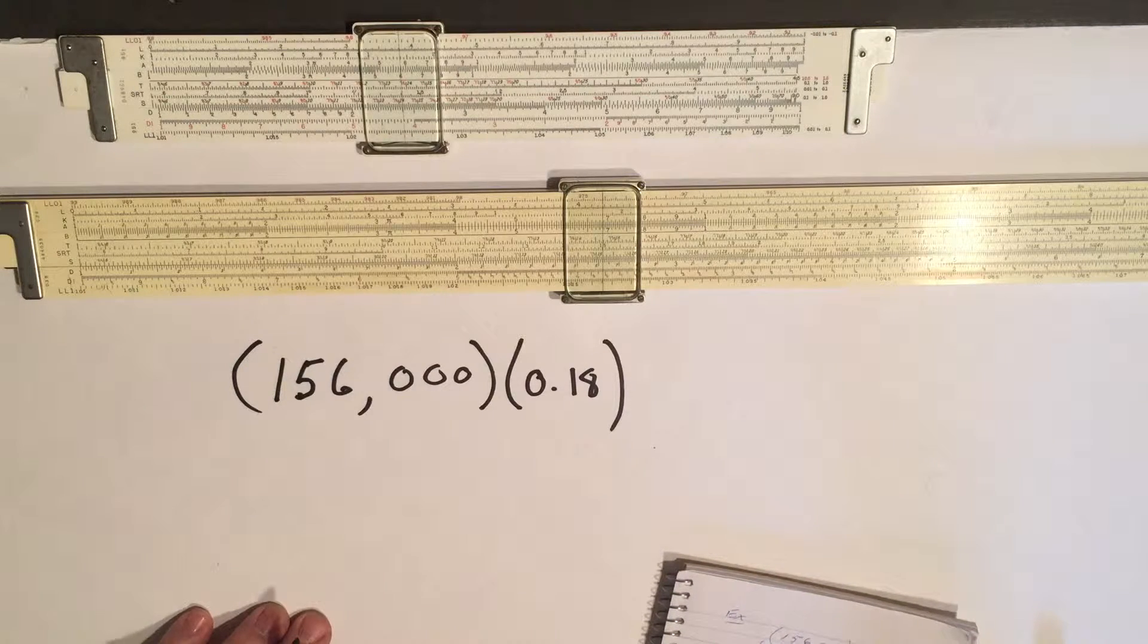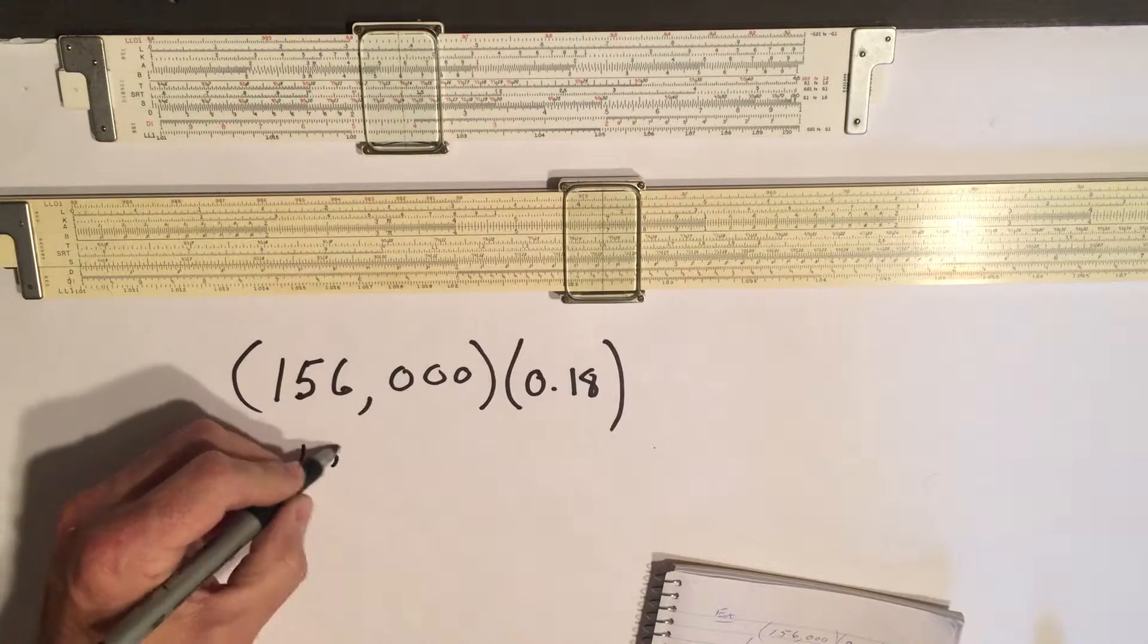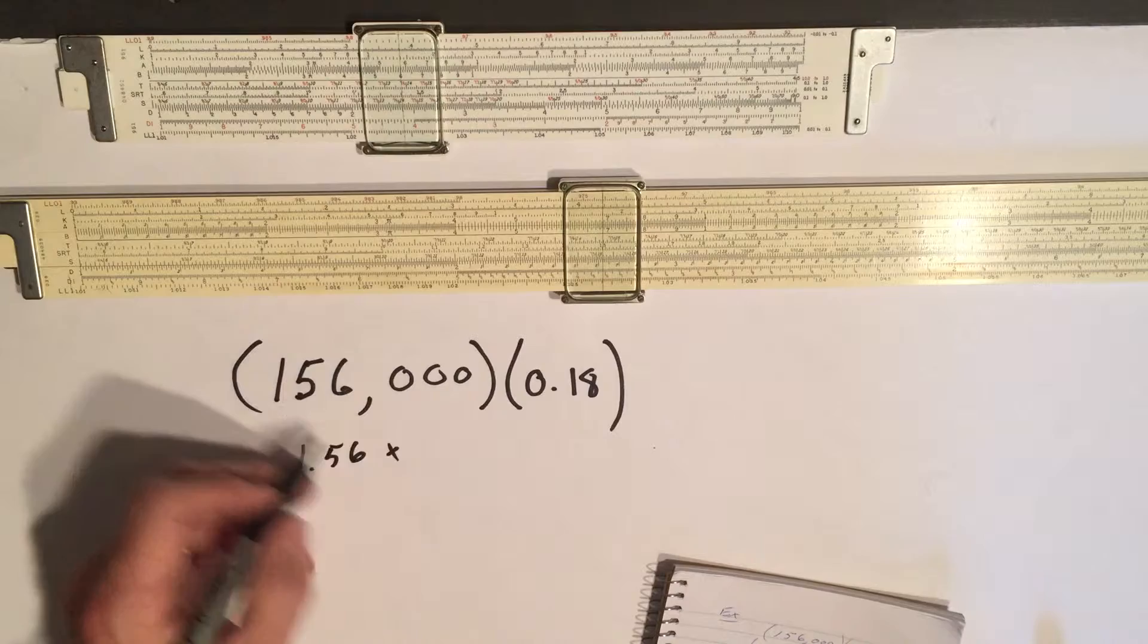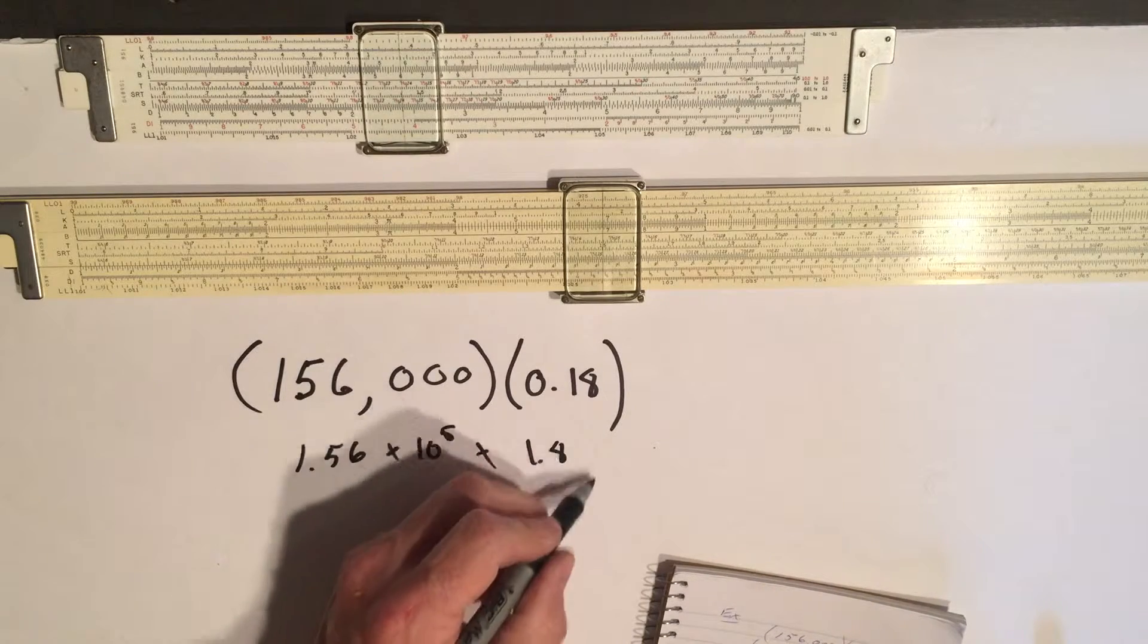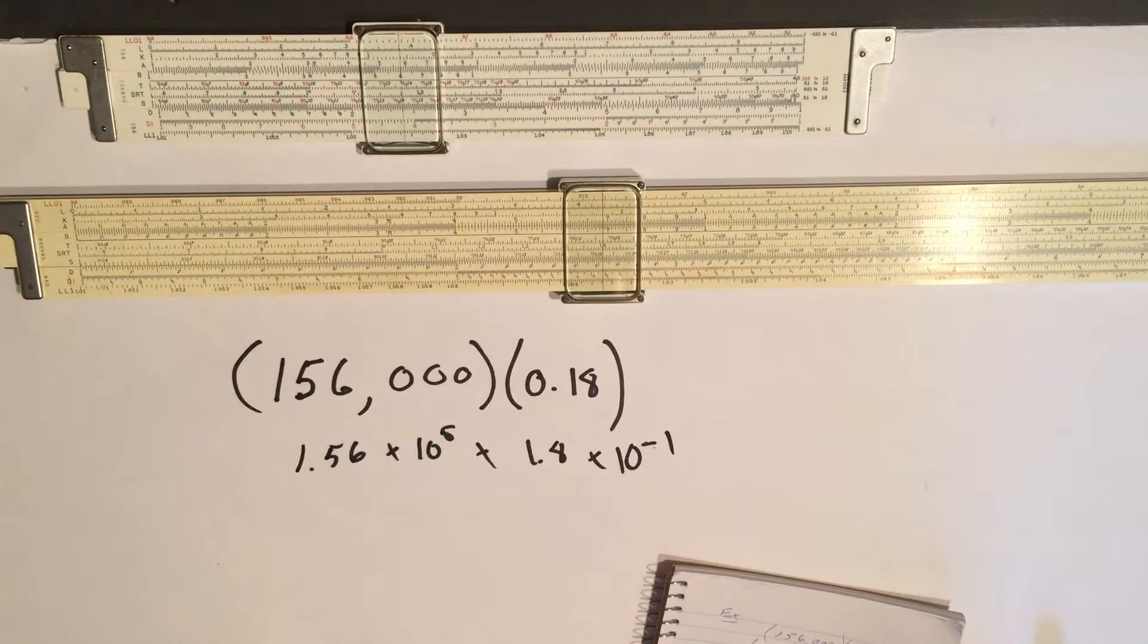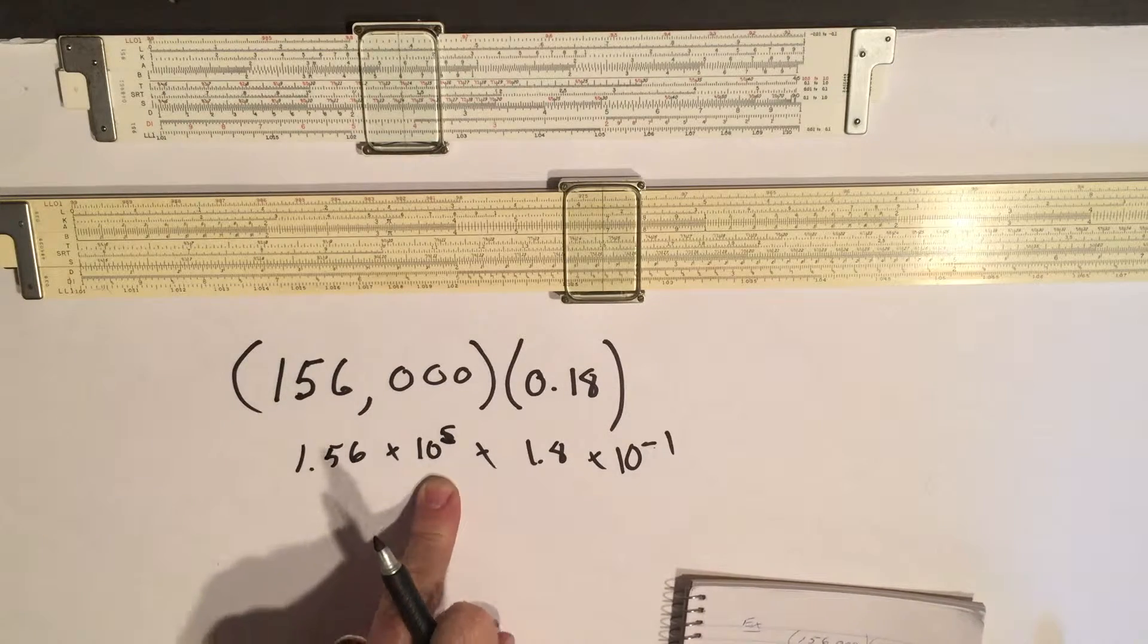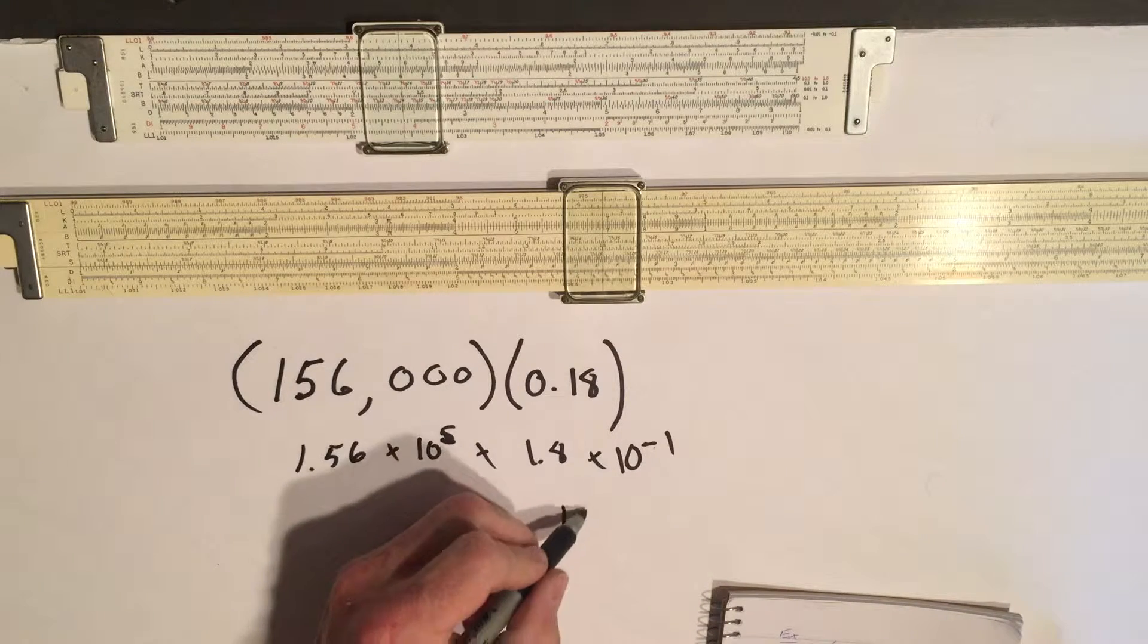Now maybe you've learned in grade school you would convert this to scientific notation. This would be 1.56 times 10 to the 5, times 1.8 times 10 to the minus 1. Exponents when you multiply them together you add, so really the times 10 power becomes 10 to the 4.